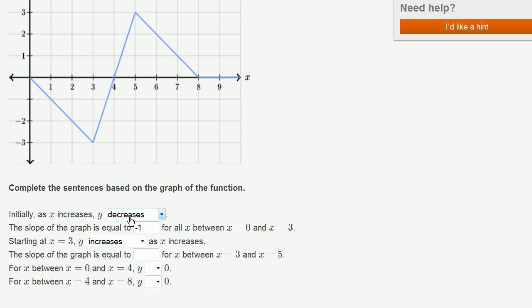Slope is change in y over change in x, which is 3 over 1. So the slope here is 3. Every time x increases by 1, y increases by 3.